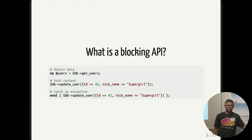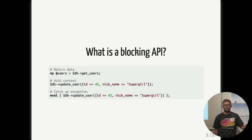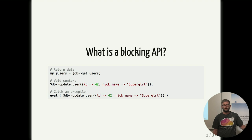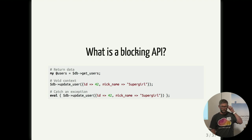You can call it in different contexts - some methods return something, some have no return value, some throw an exception - but all of those will make your program stop. This might be perfectly fine if you just have one script doing one thing. But if you're writing a web server or something supposed to be concurrent and do things in parallel, then you simply can't use this way of programming.